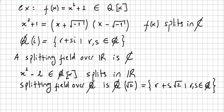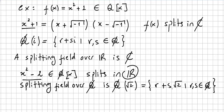Another example: x squared minus 2 is in this field over the rationals. It has no zeros there, but x squared minus 2 splits in the reals. However, if you want a splitting field over the rationals, the splitting field over the rationals is the Gaussian rationals with square root 2 — the set r plus s·√2 where r and s are rational. You can check that you have zeros for this polynomial in this field.